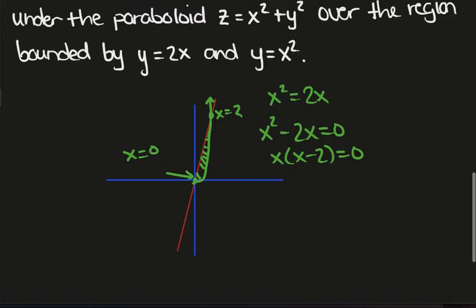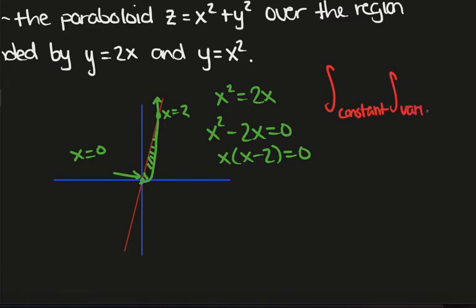Now as before, we need to have the outside integral having constant bounds and the inside integral having variable bounds. I always like the x integral to be the one with constant bounds, so we'll have an integral from 0 to 2. The lower curve is given by x squared. The upper curve is given by 2x. And our integrand is x squared plus y squared. And I have dy dx.